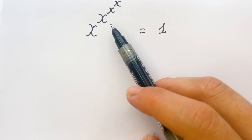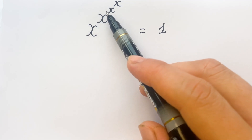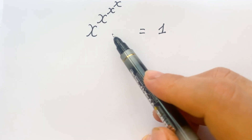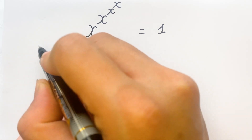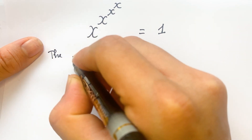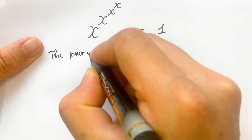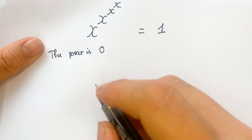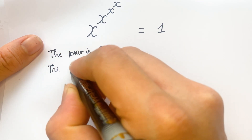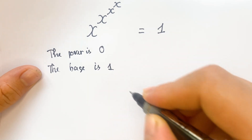When can an exponential expression equal 1? There are two cases: firstly, the power is 0; and secondly, the base is 1.